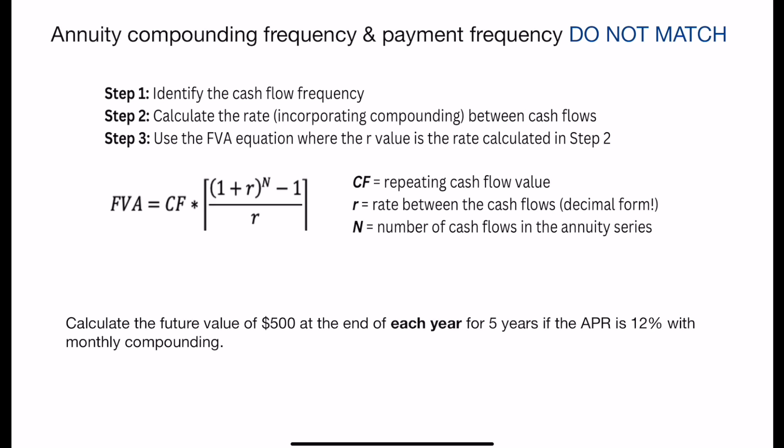In my previous video, which I can link up above and also in the description box, I did all examples where the compounding frequency and the payment frequency do match, and in that case we use the periodic rate. In this case, though, you'll see when we draw a timeline that we can no longer use that periodic rate.